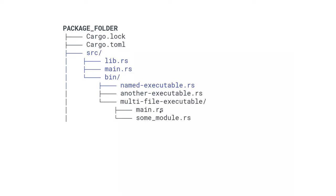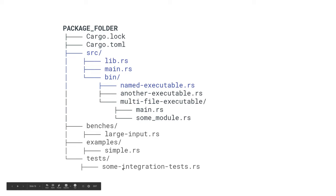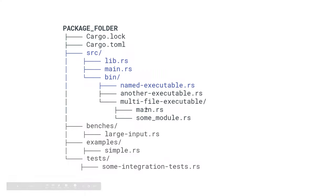You can also create a folder for multi-file executables — put `main.rs` and other modules in there and it compiles to one executable with that folder's name. You can also have a `benches` folder for benchmarks, an `examples` folder for examples, and a `tests` folder for integration tests — not unit tests, but tests that use your library in a conventional setting to verify the whole library works together.